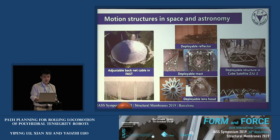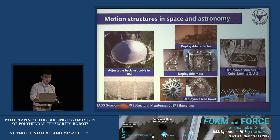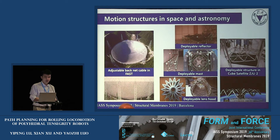In the field of space and astronomy, some studies about motion structures have been carried out. The national project FAST in China is constructed with adjustable back-net cables at its base. The adjustable back-net cables are designed to support the 500-meter aperture spherical telescope. With the motion of the back-net cables, the aperture spherical telescope can be settled into different postures. Motion structures can also be applied to deployable reflectors, masts, and deployable structures used in cube satellites.